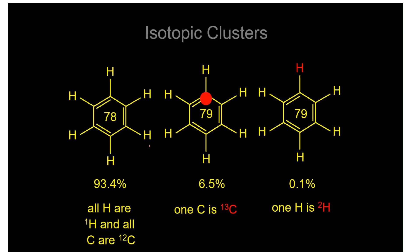93.4% of the benzene molecule is due to the most abundant isotopes of carbon and hydrogen. About 6.5% of the species contains carbon-13, and about 0.1% contains deuterium, so approximately 6.6% of your sample gives an M+1 peak.